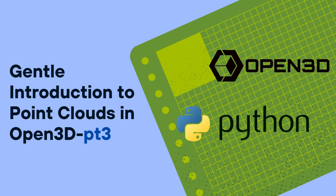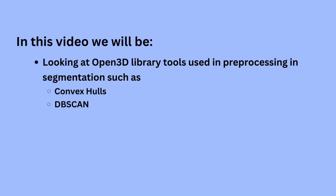This video is part of a tutorial series that aims to look at the general workflow for working with point cloud data in Open3D. In our last video, we talked about preprocessing point cloud data through downsampling and object removal. And in this video, we will be continuing our endeavor to look at different preprocessing techniques and segmentation, such as the use of convex hulls and segmentation using DBSCAN.